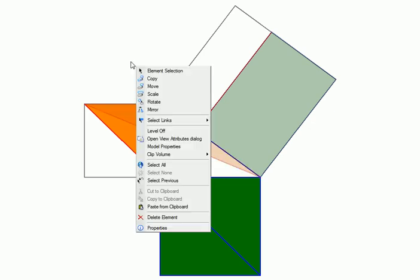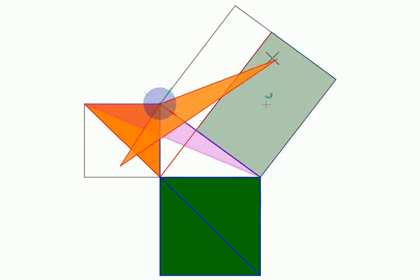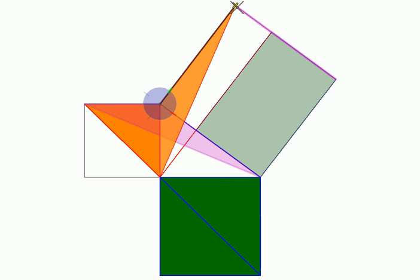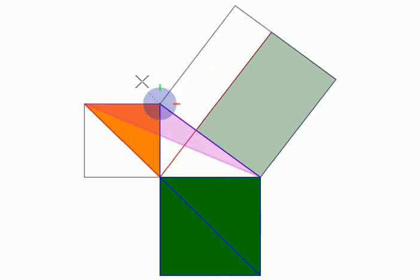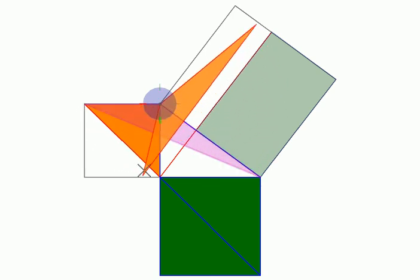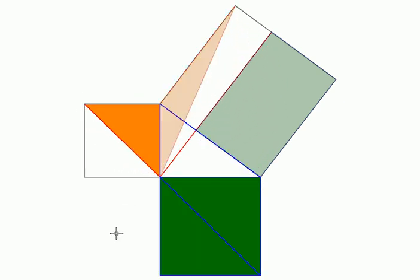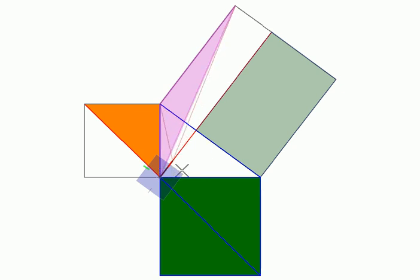Then I am going to rotate this triangle about this point so that this side of it comes and sits on the other side of the square. You can look at it as rotating this triangle about this point until this side of the square comes and fits on the other side of the same square. So still the two triangles have the same area.